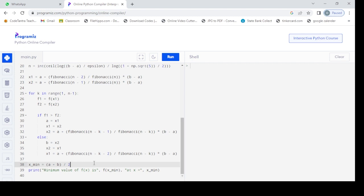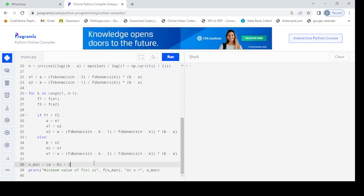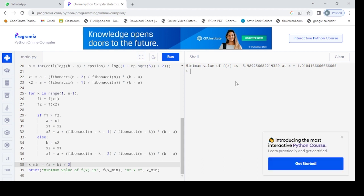Then we get the x minimum at (a + b) / 2. Here we run this code. We get minimum function at x = 1.0104 and minimum function f(x) is -5.9892.